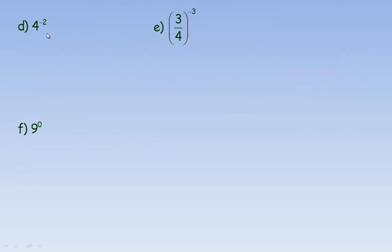In example d, we have 4 to the power of negative 2. The next two examples both involve negative exponents. The rule is that a negative exponent means a reciprocal — you take the number and flip it upside down: the numerator becomes the denominator and vice versa. So a to the power of negative x equals 1 over a to the x. When you move the power into the denominator, the exponent changes sign. So 4 to the negative 2 equals 1 over 4 squared. Since 4 squared is 16, the answer is 1 over 16.